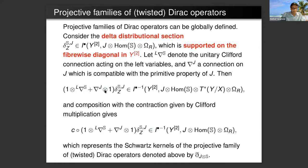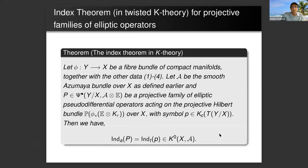This is also a connection, and it acts on the Dirac delta distribution, and the composition of the contraction given by Clifford multiplication represents the Schwartz kernel of the projective family of Dirac operators. This gives in the usual case the actual family of Dirac operators along the fibers, but we define it using Schwartz kernels because we are doing the projective case. If you want to define it directly in terms of operators, you can only do it locally, so this is much more elegant because it's global.